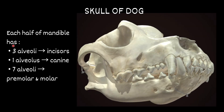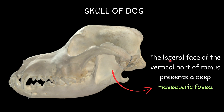Each half of the mandible has three alveoli for incisors, one alveolus for the canine, and seven alveoli for the premolars and molars. The lateral face of the vertical part of the ramus presents a deep masseteric fossa.